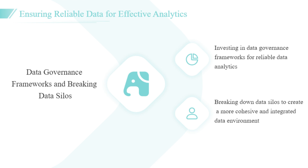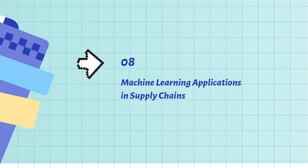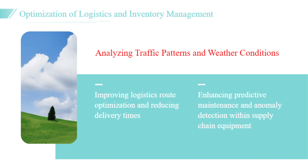Machine learning applications have the potential to optimize various aspects of supply chain operations. By utilizing advanced algorithms, businesses can improve logistics route optimization and inventory management. For instance, a logistics company employed machine learning models to analyze traffic patterns and weather conditions, resulting in more efficient shipping routes and reduced delivery times. This optimization not only cuts costs but also enhances customer satisfaction through timely deliveries.